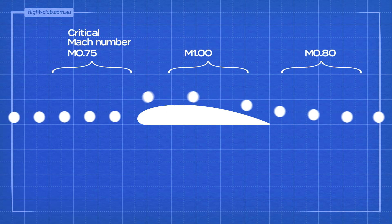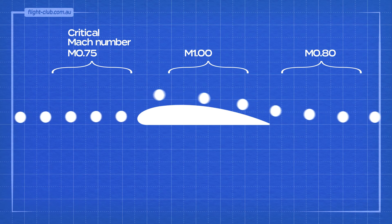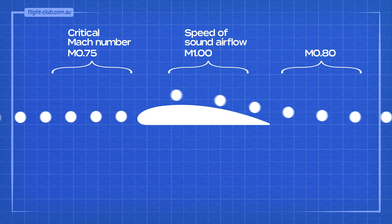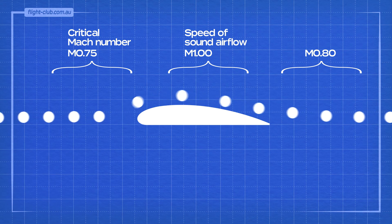A critical Mach number of an aeroplane is the lowest Mach number at which the airflow over the wings reaches the speed of sound, but does not exceed it. The critical Mach number is the speed at which the first shock waves form.